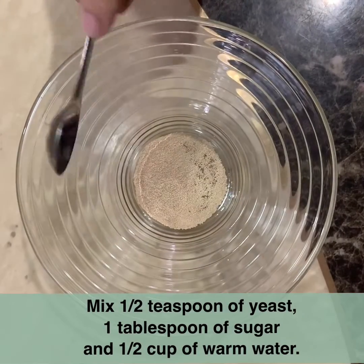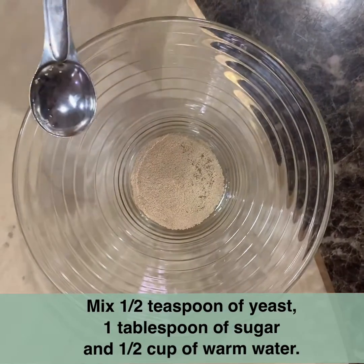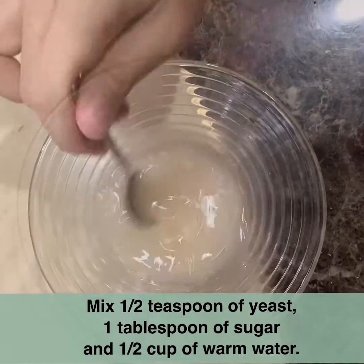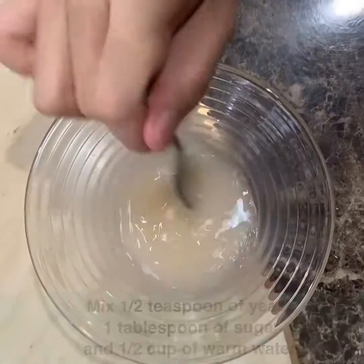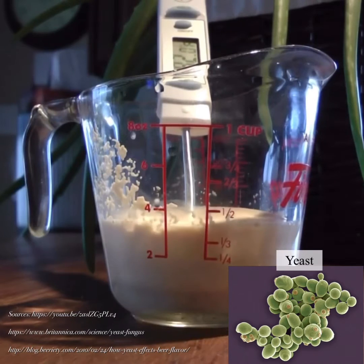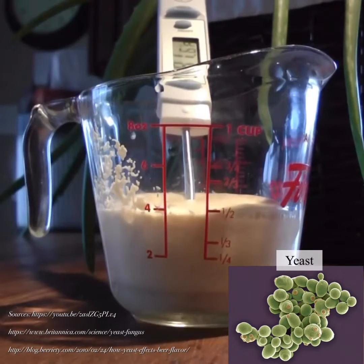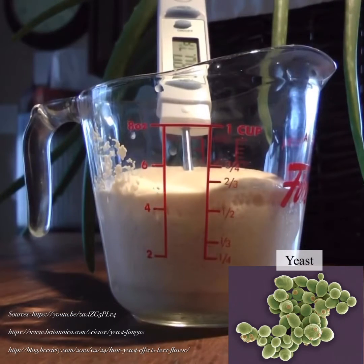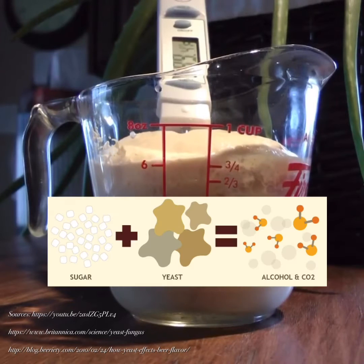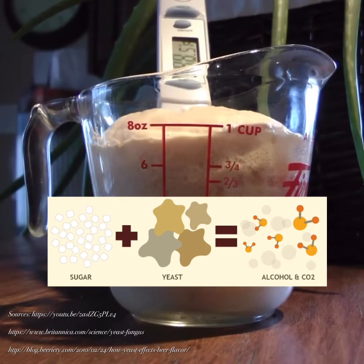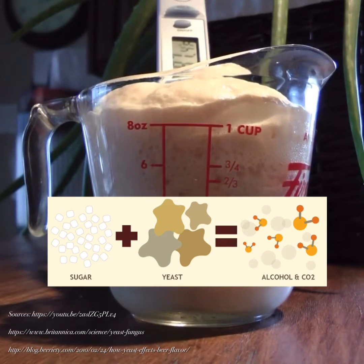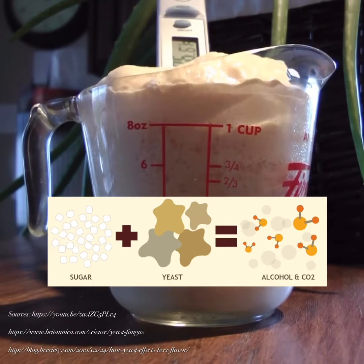First, mix half teaspoon of yeast, one tablespoon of sugar, and half cup of warm water. Yeast is one kind of fungus. Yeast survive by eating carbohydrate food like sugar. Yeast causes the sugar to turn into alcohol, carbon dioxide, and energy. This is to activate the dry yeast that we are using later.